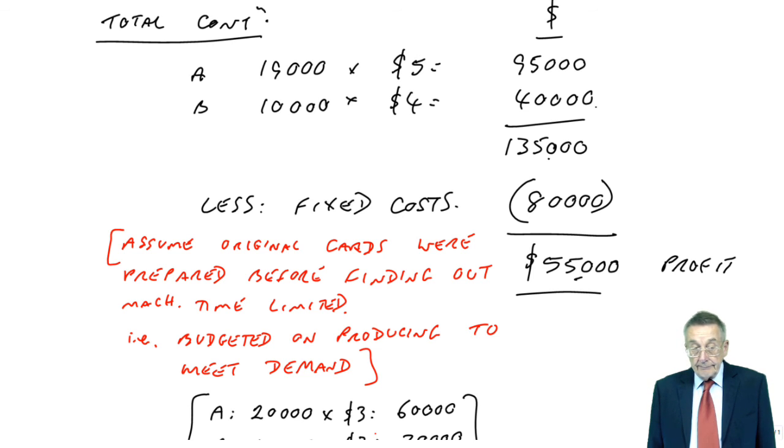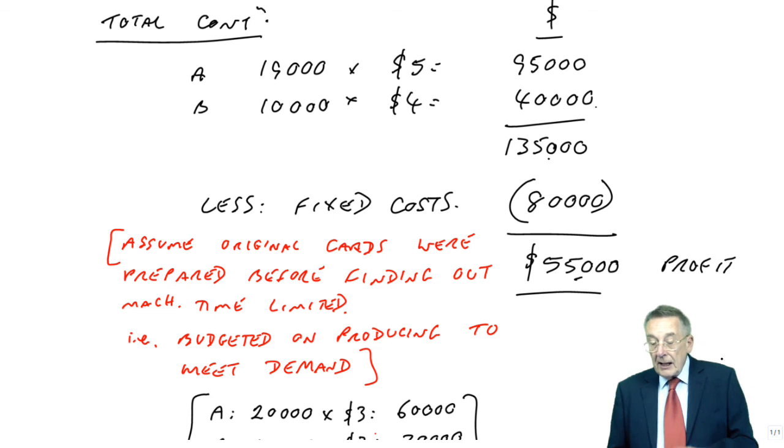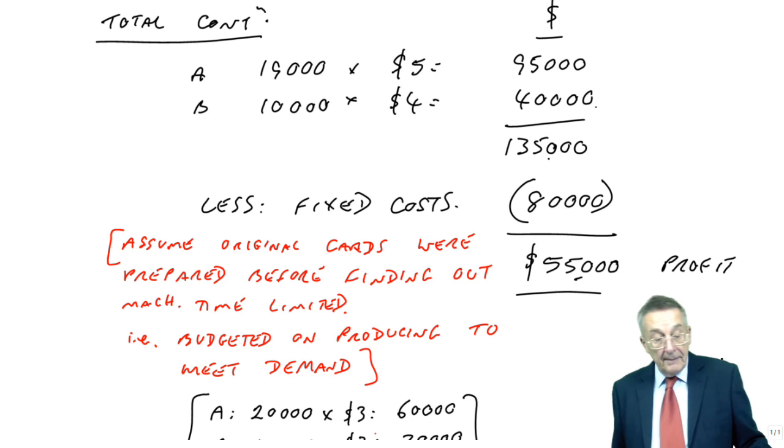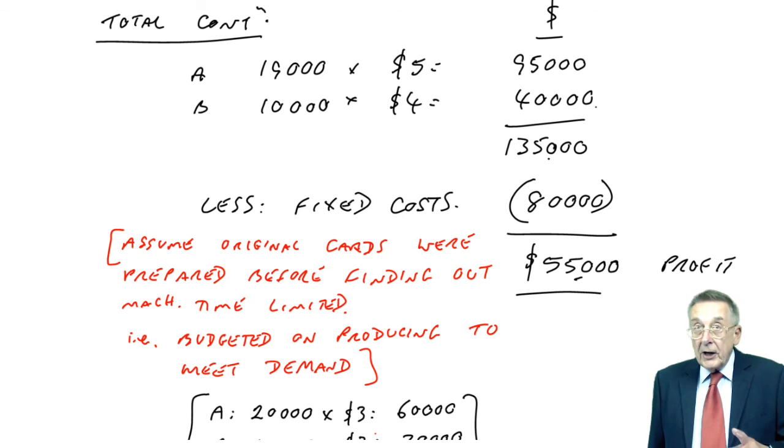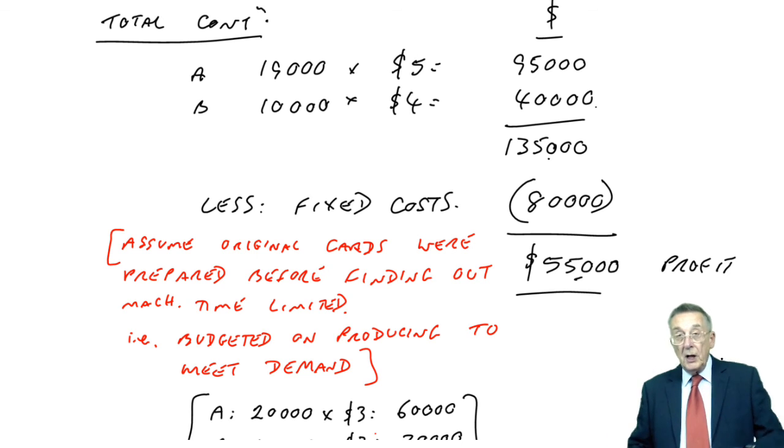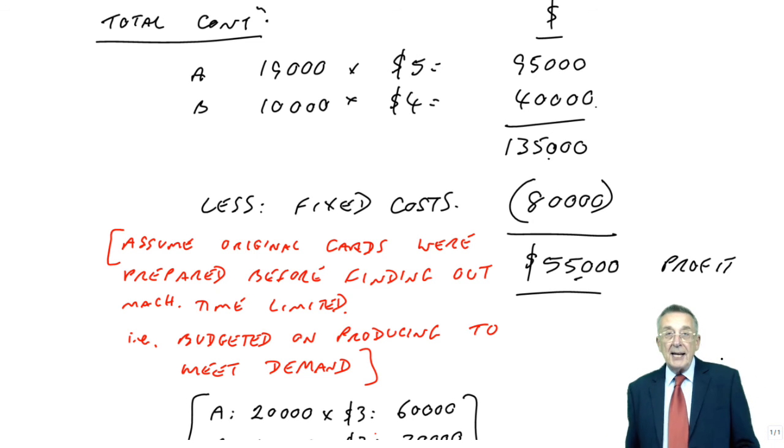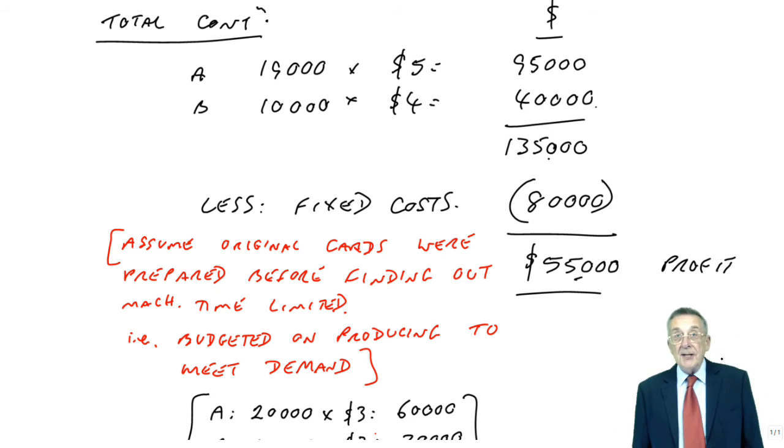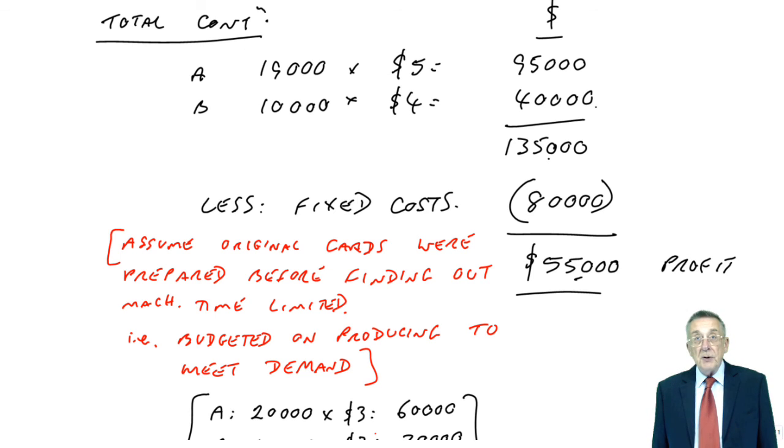And there we are, lovely little exercise. That's conventional limiting factor analysis. However, rather more importantly is something called throughput accounting. And what we're going to do, to avoid the lecture being too long, I'm about to pause but then immediately in the next lecture we'll carry on with exercise two, where we're going to take exactly the same example but we'll take a throughput accounting approach. I'll explain what that is and how we change our approach a little bit. But that's in the next lecture.